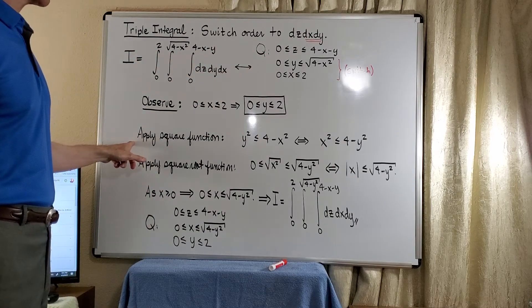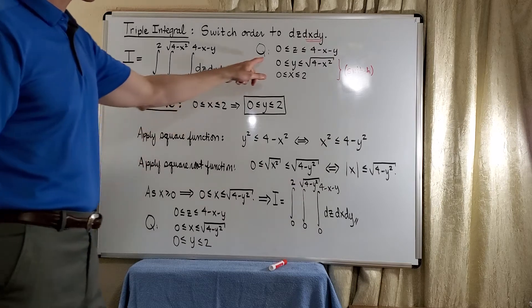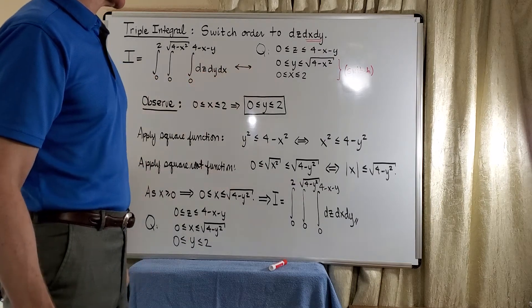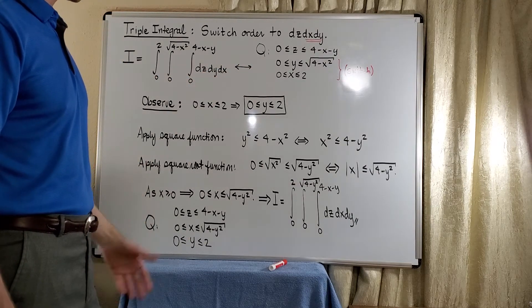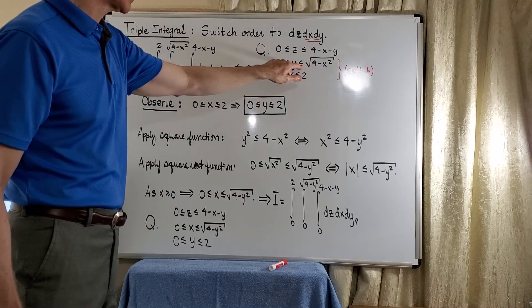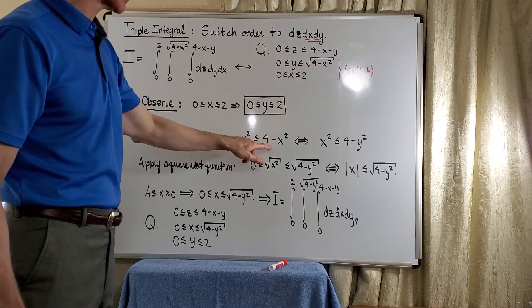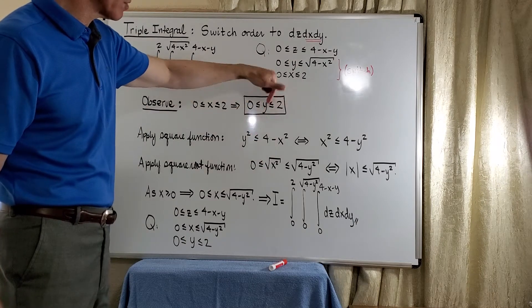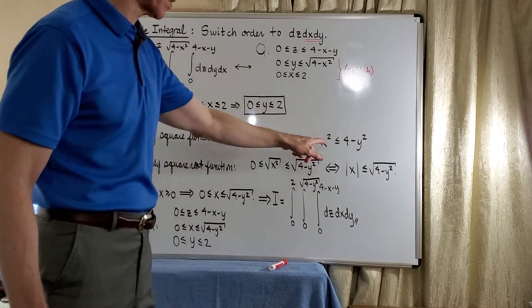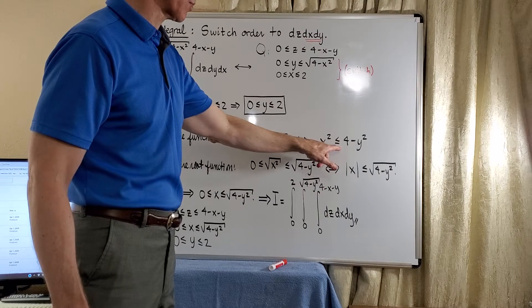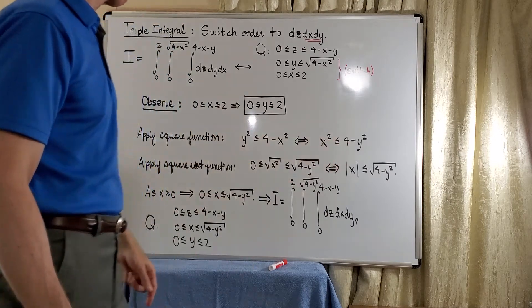What we're going to do is apply the square function. For this particular interval, the square function is increasing, so it will preserve the inequality. So we'll get y squared is less than 4 minus x squared. Then we interchange the x squared and the y squared. And we get x squared is less than or equal to 4 minus y squared.